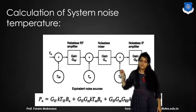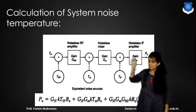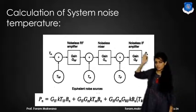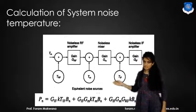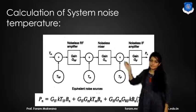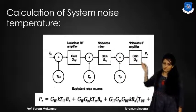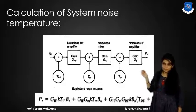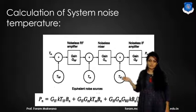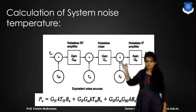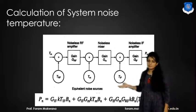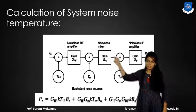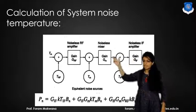Now, we know the mixer amplifier, RF amplifier, and IF amplifier — all three are treated as noiseless. So we need to calculate the noise power using the expression: G·K·T·BN, where GIF is the gain of the IF amplifier, K is Boltzmann's constant, TIF is the temperature of the IF amplifier, TM is the temperature of the mixer, and TRF is the temperature of the RF amplifier. Then we have terms GIF·Gm·K·TM·BN and GIF·Gm·K·TRF·BN.